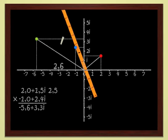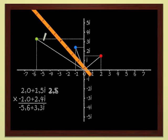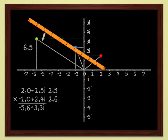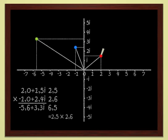For the blue point, I get 2.6. And for the green point, which is the product of the two points, I have 6.5. As a rule, the modulus of a product of two complex numbers is just the product of the moduli of the two numbers.